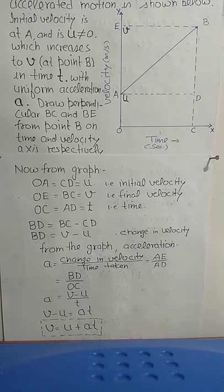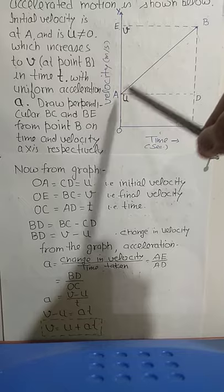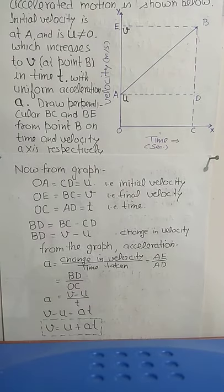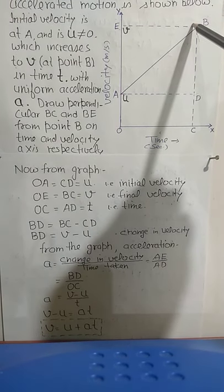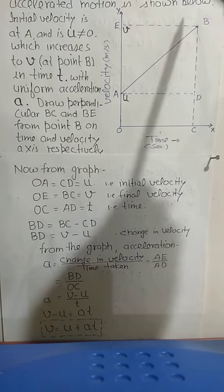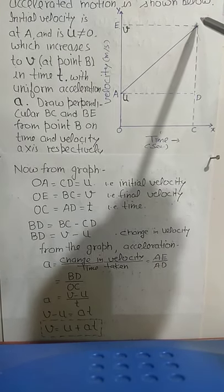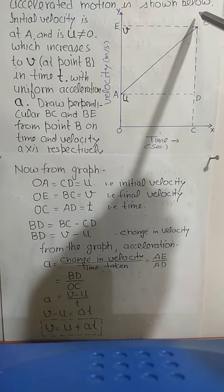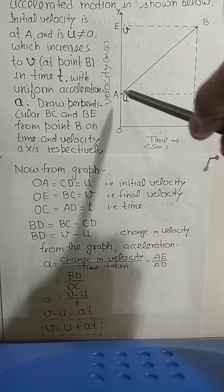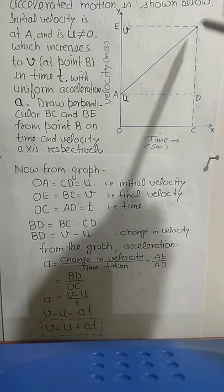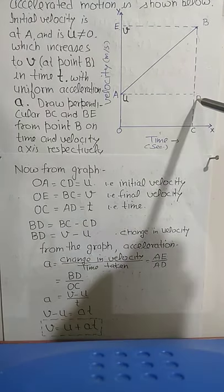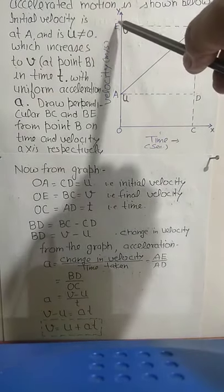I have already told you that in this graph of uniformly accelerated motion, acceleration from point A to B can be found by the relation: A = BD upon AD.